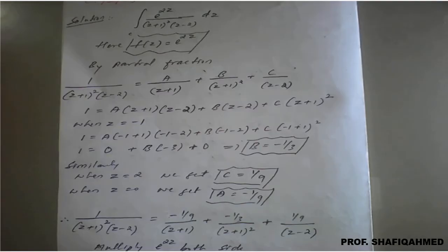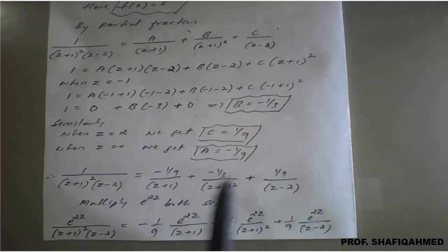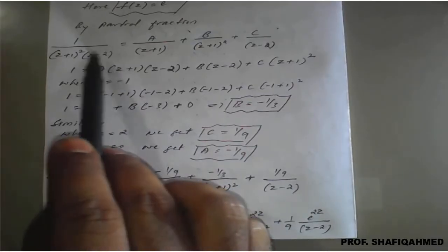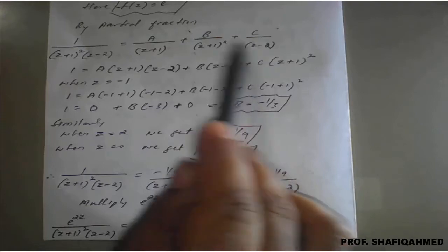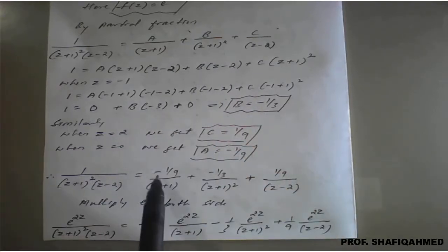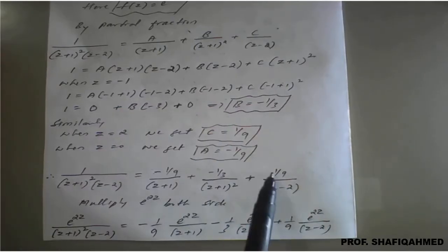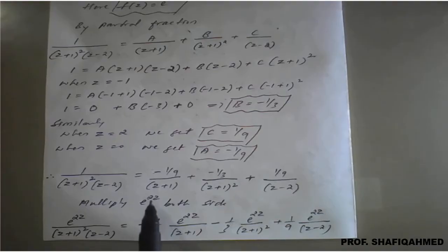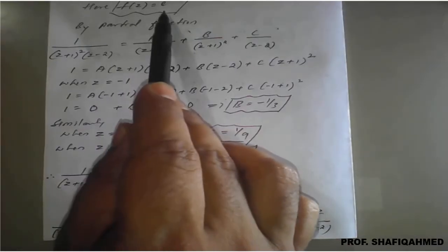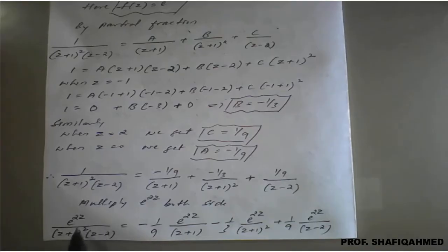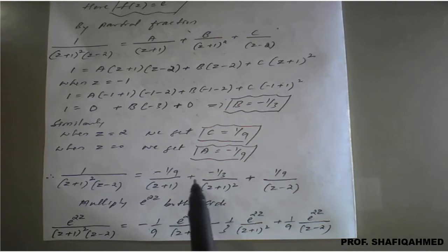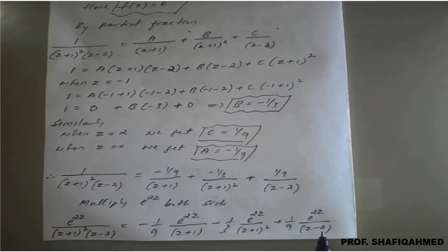Apply the values of A, B, C in the given partial fraction form. The left hand side as it is, right hand side substitute the A value, B value, C value and rearrange. Before rearranging, multiply e raised to 2z on both sides. So the expression becomes: minus 1 upon 9 times e raised to 2z upon (z plus 1), minus 1 upon 3 times e raised to 2z upon (z plus 1) square, plus 1 upon 9 times e raised to 2z upon (z minus 2).